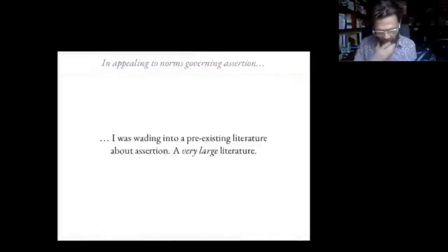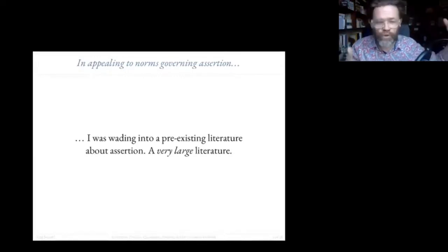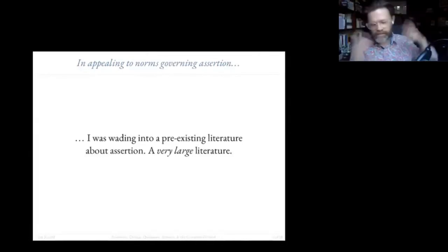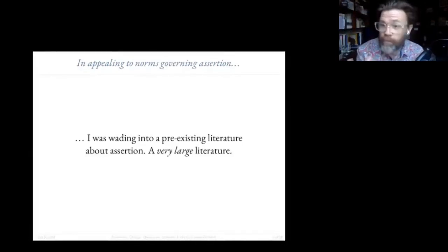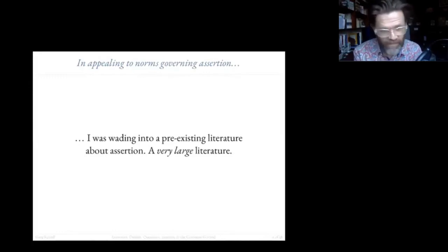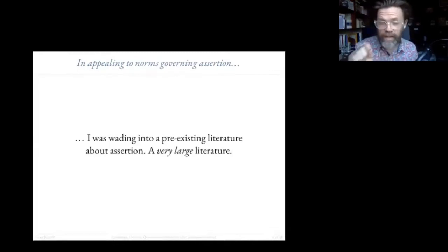That was the kind of line that I ran. In 'Multiple Conclusions,' I was appealing to norms governing assertion and denial, and I was wading into a very large pre-existing literature about norms of assertion. I was aware that I was doing that. I was ignoring most of it. But I want to revisit some of that literature now to say a little bit more, because it's going to help me clarify some of the issues I left unclear.